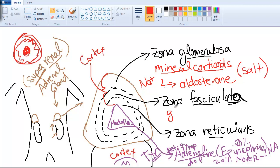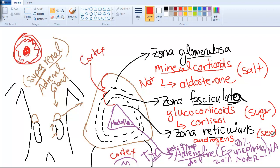In the zona fasciculata we have glucocorticoids, and the specific glucocorticoid of concern is cortisol. That helps regulate sugar in the body. And then we have androgens. The androgens regulate the sex hormones in the body, such as testosterone and estrogen.